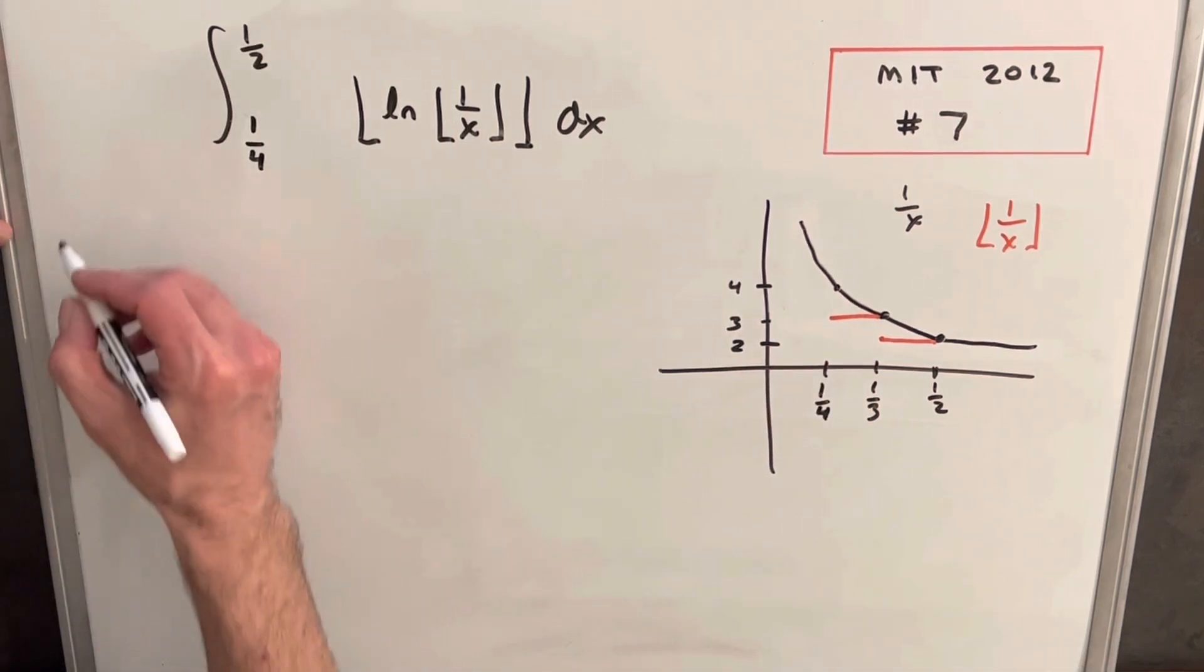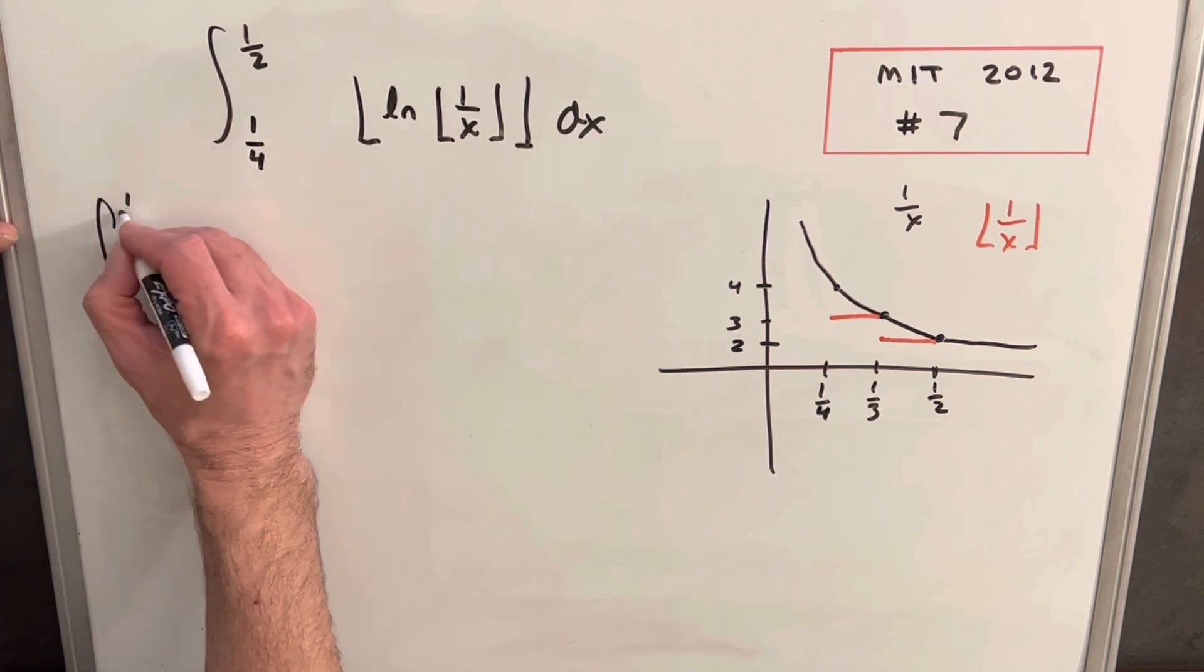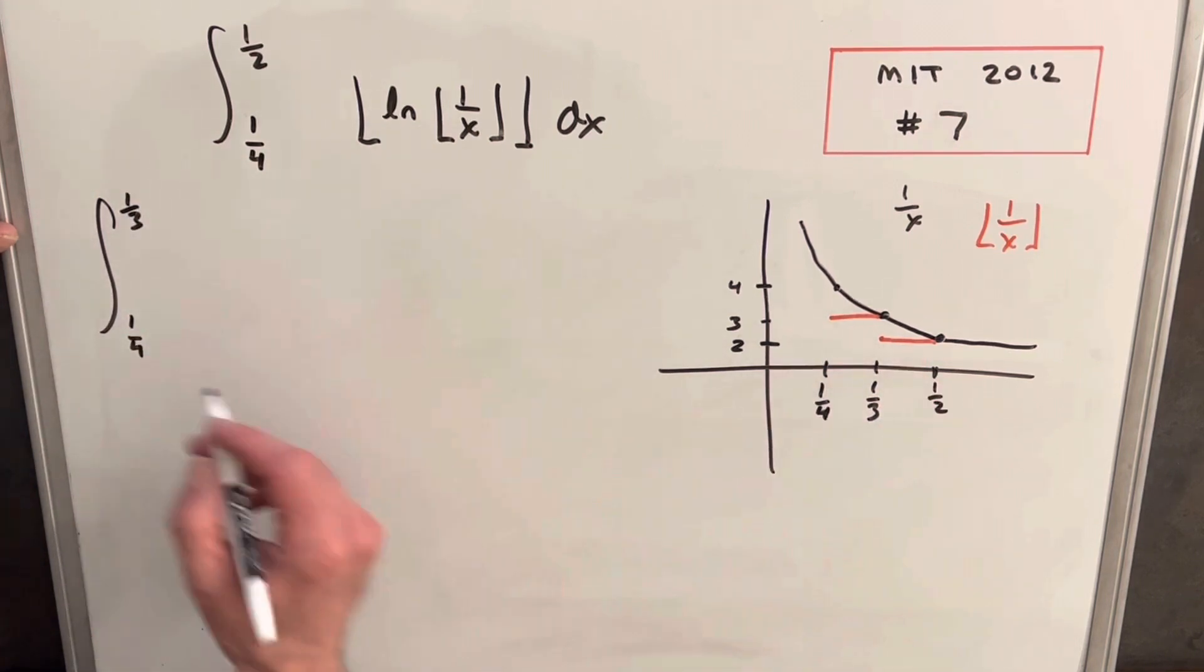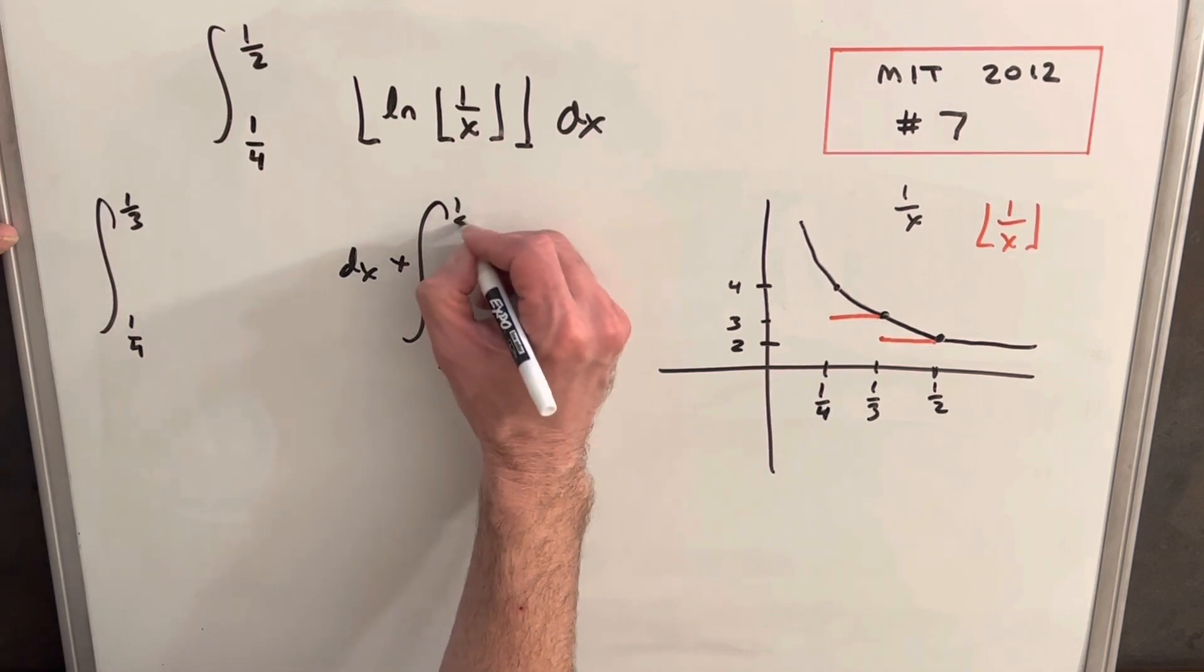So what that's going to allow me to do is just split my integral into two. So we'll write it. We'll separate our bound from one-fourth to one-third, as we have a value there for that. And then we'll have another one from one-third to one-half.